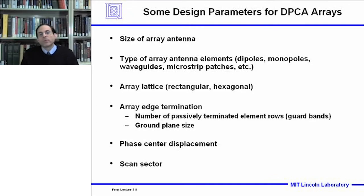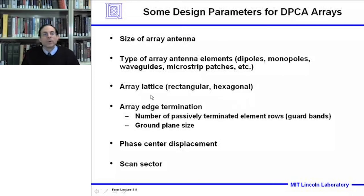Here are some design parameters for a DPCA array. We have a choice of the size of the array antenna, the type of array antenna elements — they could be dipoles, monopoles, waveguides, or microstrip patches. The array lattice typically can be either rectangular or hexagonal. There are different ways of terminating the array edge; typically there'll be passively terminated elements or rows of guard bands to avoid array edge effects. The ground plane size, phase center displacement, and the scan sector or electronic scanning of the phased array are also going to be addressed.